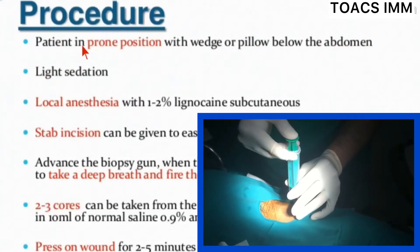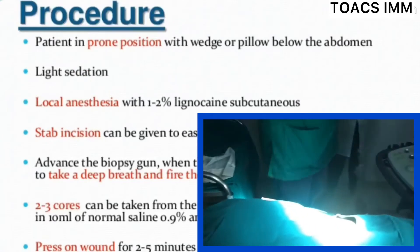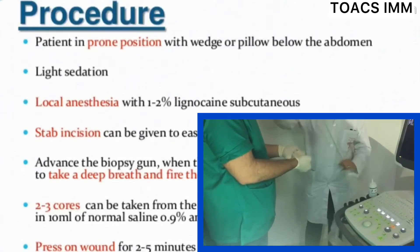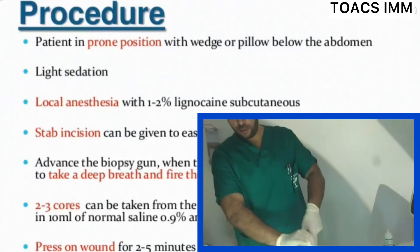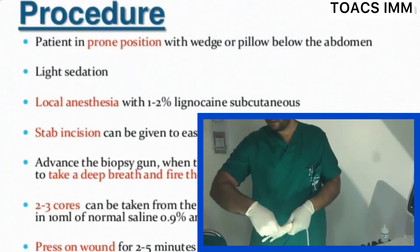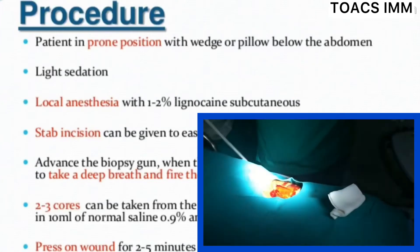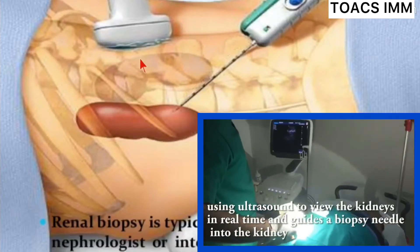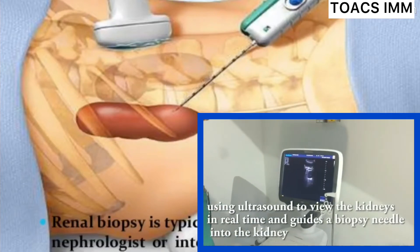For the procedure: the patient is placed in prone position with a wedge or pillow below the abdomen. Light sedation and local anesthesia with 1-2% lignocaine are given. A small skin incision is made for biopsy gun entry. The gun is advanced, and when the capsule is reached, the patient is instructed to take a deep breath and the gun is fired. Two to three cores are taken from the lower pole of the left kidney, placed in 10 ml of normal saline, and sent to the laboratory. Pressure is applied for 2 to 5 minutes. Biopsy is typically performed by a nephrologist or interventional radiologist.